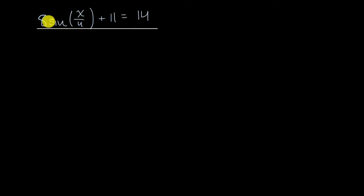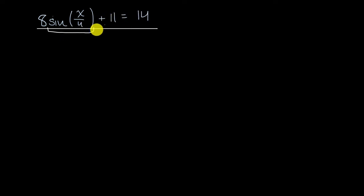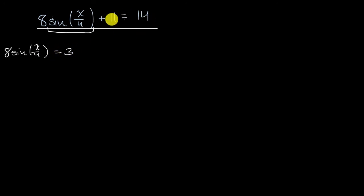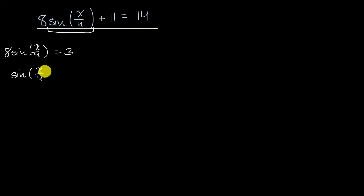Now let's work through it together. The intuition, which would be correct, is to isolate sine of X over four algebraically. The first step is to subtract 11 from both sides, giving us 8 sine of X over four is equal to 3. Then divide both sides by 8, and we get sine of X over four is equal to 3/8.